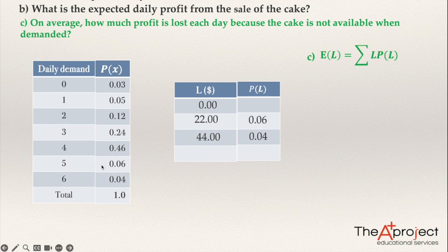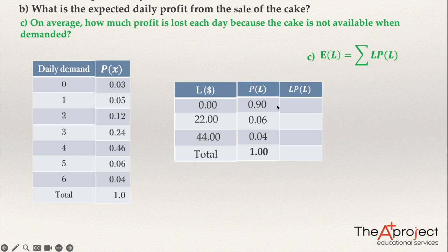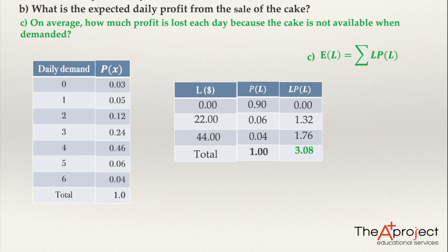So you have the probability distribution and you can now multiply each loss value by its probability and add them together. You can use Excel to make the multiplication and addition. That gives the answer to question C: on average, how much profit is lost each day because the cake is not available when demanded. And with that, I finish this video. Thank you.